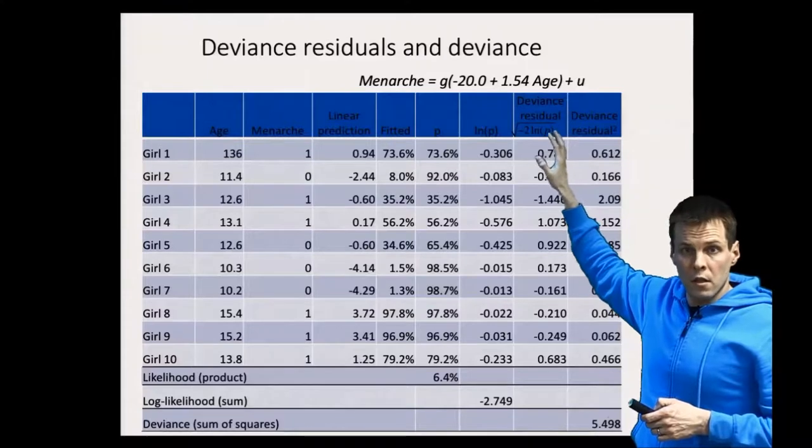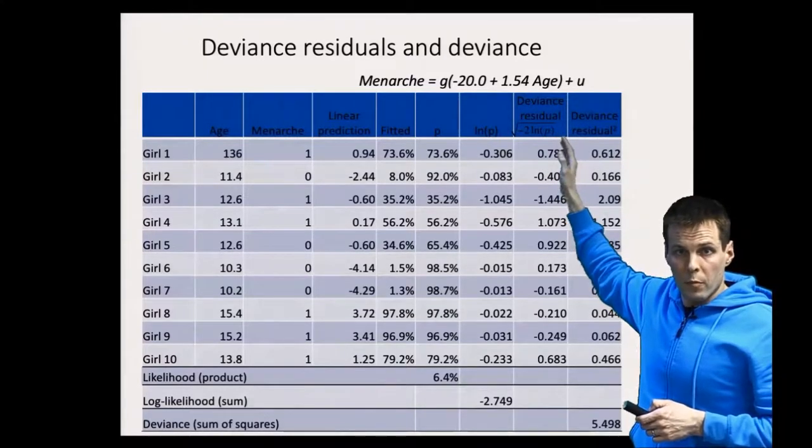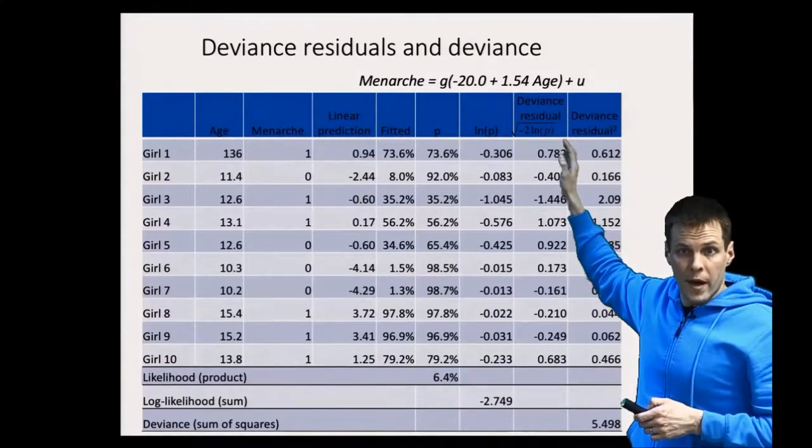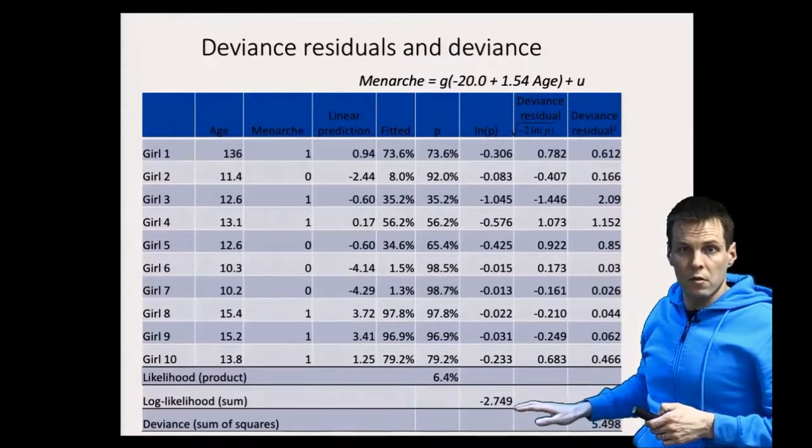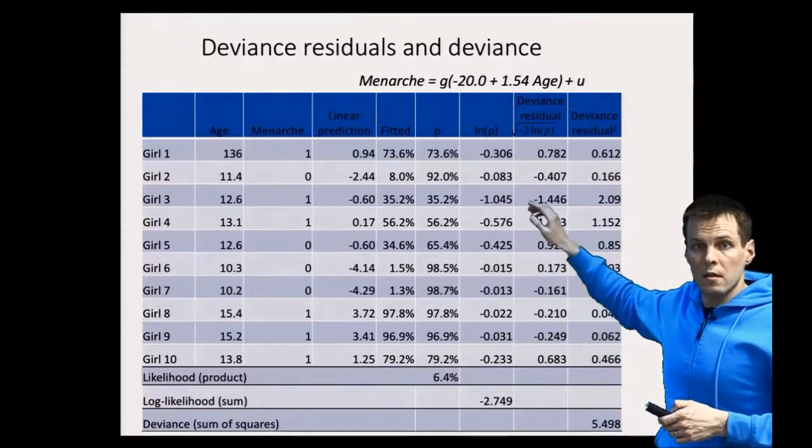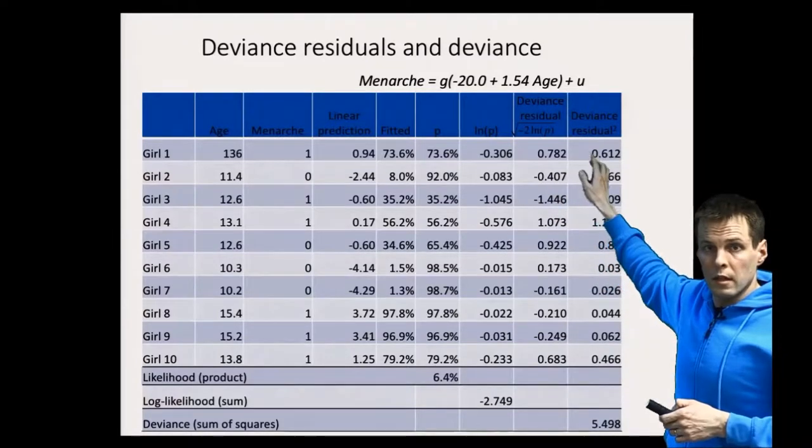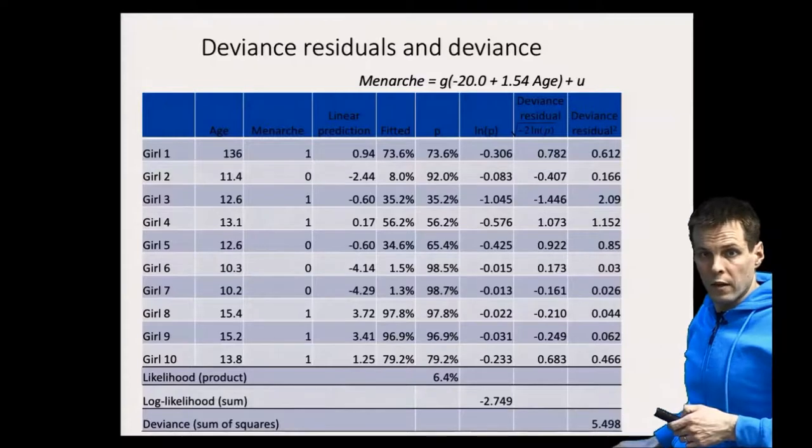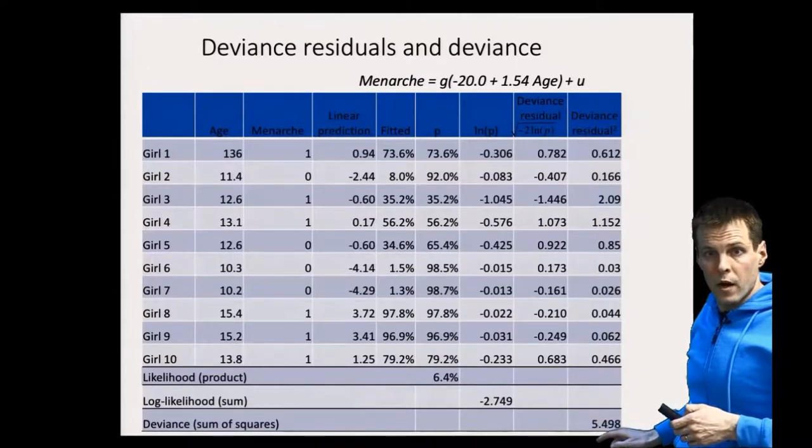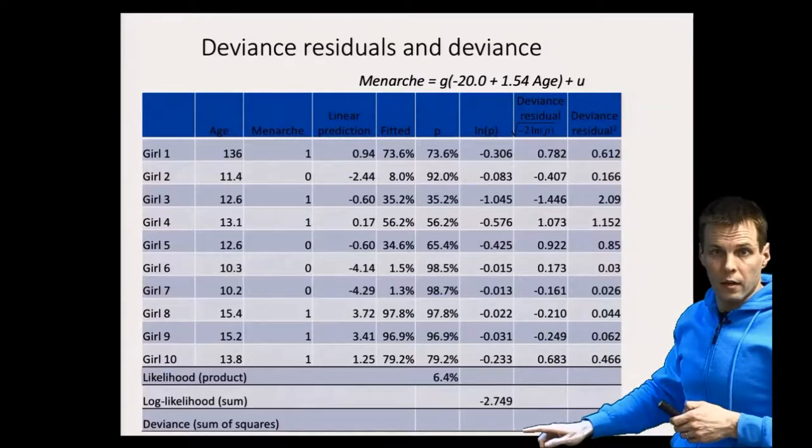That deviance residual has some interesting properties that are parallel to the residuals in a normal regression analysis. The square deviance residual is here, and the sum of square deviance residuals is the full deviance of the sample. The full deviance is minus two times the log likelihood.